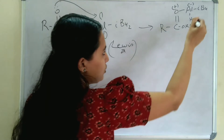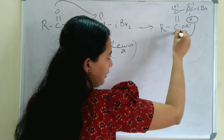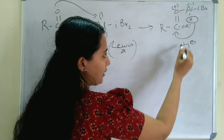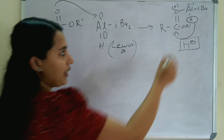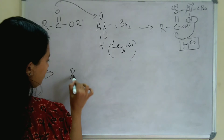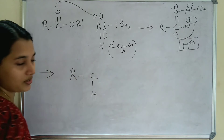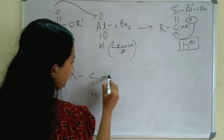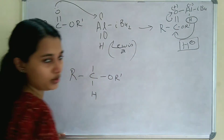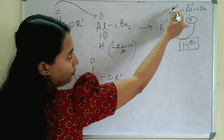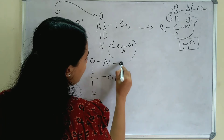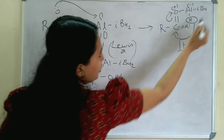So hydride transfer takes place — H⁻ hydride transfer occurs. This H is attached to the carbonyl carbon. In the hydride transfer step, the hydrogen migrates to the carbonyl carbon, giving R–CH with the aluminium-oxygen bond intact and the isobutyl groups on aluminium.